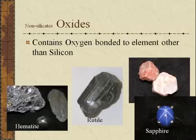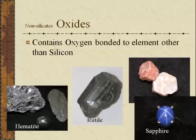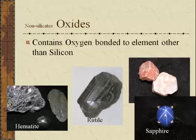Oxides are another non-silicate group. They contain oxygen bonded to some element other than silicon. A common oxide is hematite — it's an iron oxide. Rutile is a titanium oxide. Corundum is a very common aluminum oxide. Occasionally, the aluminum oxides may be blue or red. If it's blue, we often refer to them as sapphires; the red ones we call rubies.